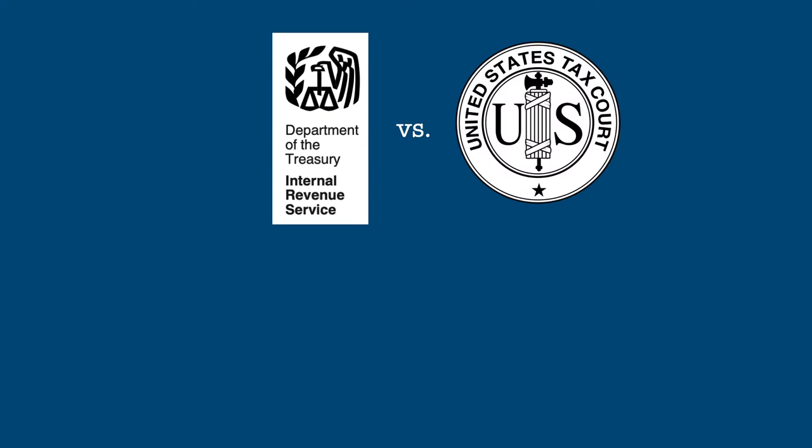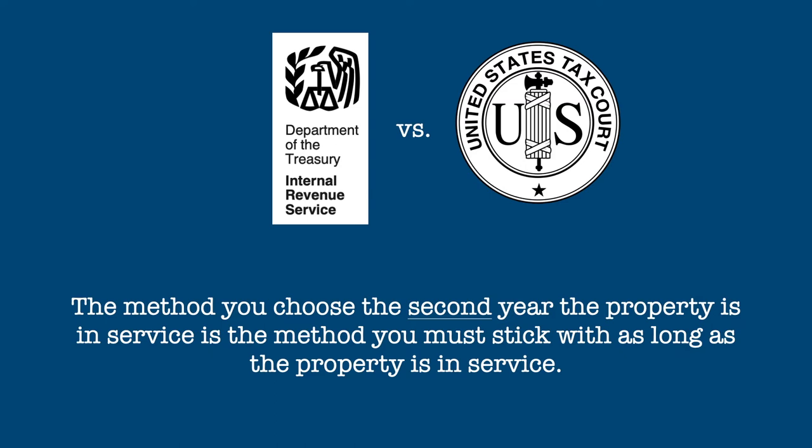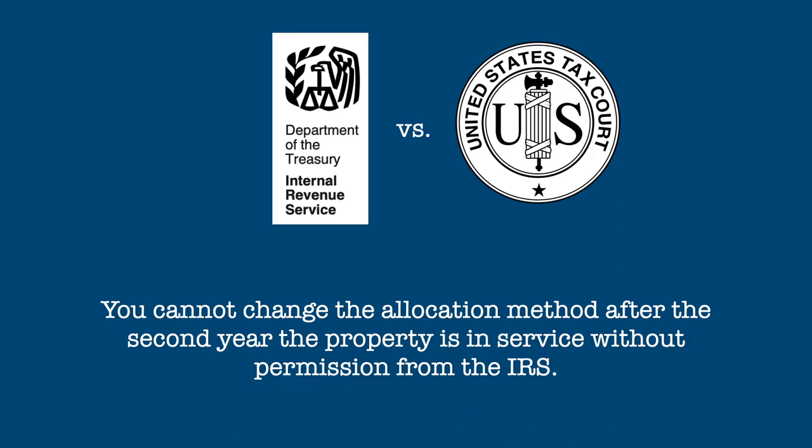It is very important that you compute your allocation both ways in either the first or second year the property is in service to determine what's most beneficial in your specific situation. The method you choose the second year the property is in service is the one you must stick with as long as the property is in rental service. You cannot change allocation methods after the second year the property is in service without permission from the IRS.